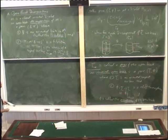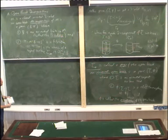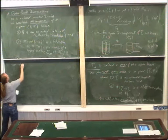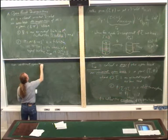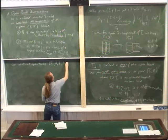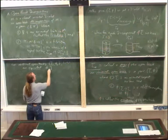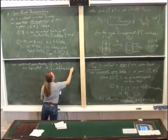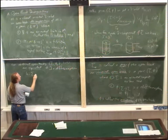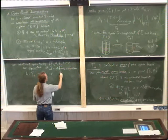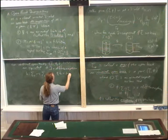We need one more definition before we can state a lemma relating the two types of open books. Two abstract open books (Σ_i, φ_i) for i = 0, 1 are equivalent if there exists a diffeomorphism h: Σ_0 → Σ_1 such that h ∘ φ_1 = φ_0 ∘ h — basically, commuting with the monodromy maps.